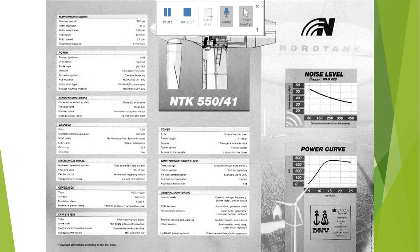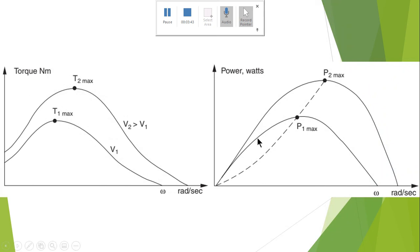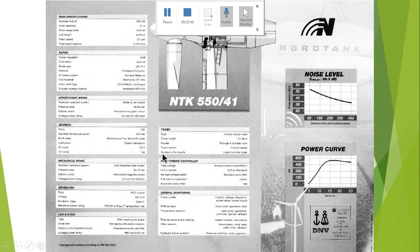This is a data sheet of a typical horizontal axis wind turbine using modern three-blade technology. Shown here are the power and noise level curves. This is the wind turbine controller parameter, and this is the yaw system being adopted by this turbine. There are other specifications also mentioned on the data sheet.